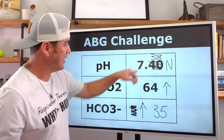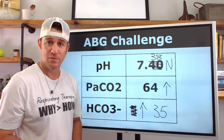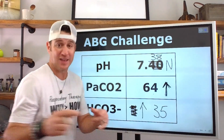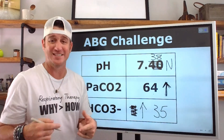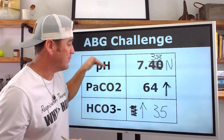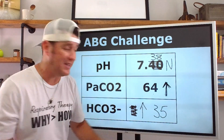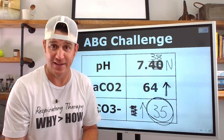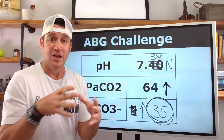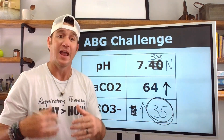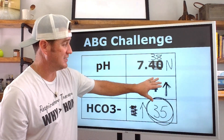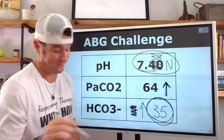So the bicarb has fully compensated for the elevated CO2, giving us a fully compensated respiratory acidosis. Why fully compensated? Because the pH is normal. Why respiratory acidosis? Because the CO2 is what's causing the acidosis. This blood gas is very consistent with a patient diagnosed with COPD who has progressed to living with chronic hypercapnia — the bicarb elevates over time to compensate for that high CO2 and maintain a normal pH.